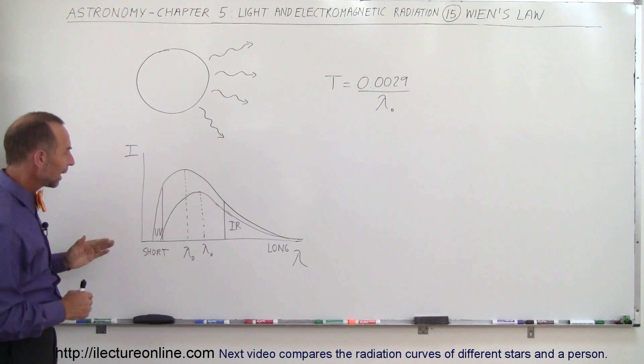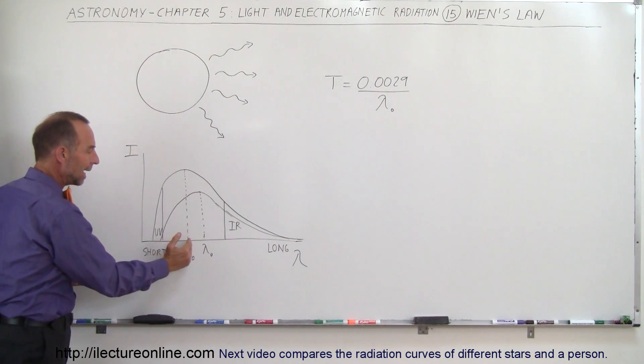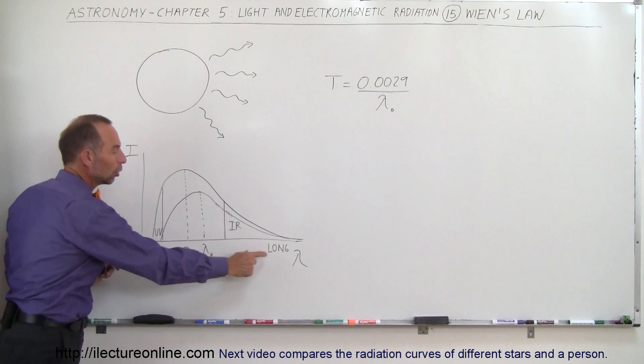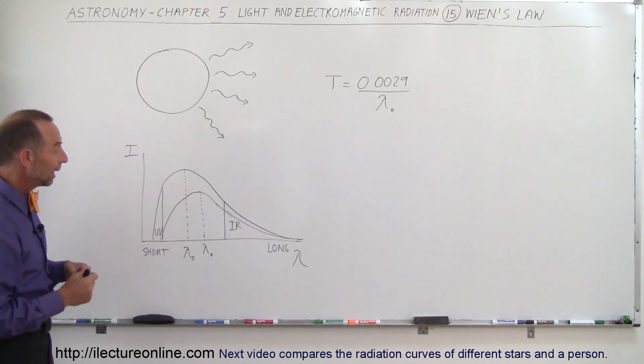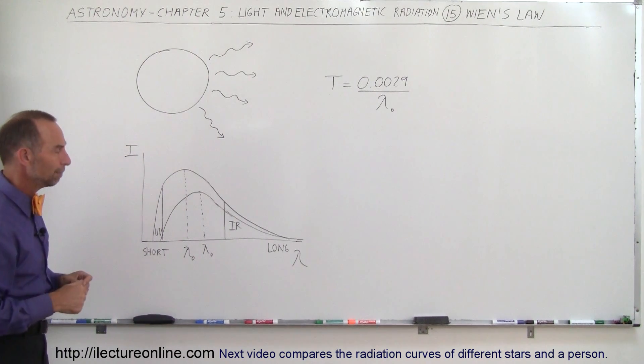Notice also that cooler objects don't radiate with as much intensity, they have a lower intensity and the radiation curve is pushed to the right somewhat. So we have longer wavelength radiation as being the peak of the curve, and also longer wavelengths means lower frequency, lower energy as well.